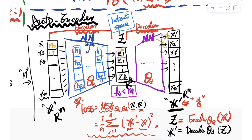We have an encoder and decoder — the left network is the encoder, the right purple network is the decoder. They have their own parameters theta_e and theta_d. We input big X through the encoder with parameters theta_e to output Z, then use Z as input to the decoder with parameters theta_d to output X prime. The dimension of Z is less than the dimension of X and X prime.